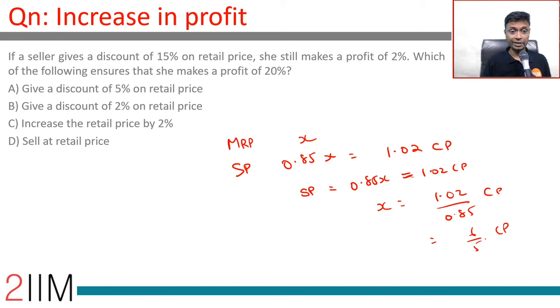Which of the following ensures that she makes a profit of 20%? If X were her selling price, she'll make a profit of 20%. She should not give any discount. Sell at retail price.